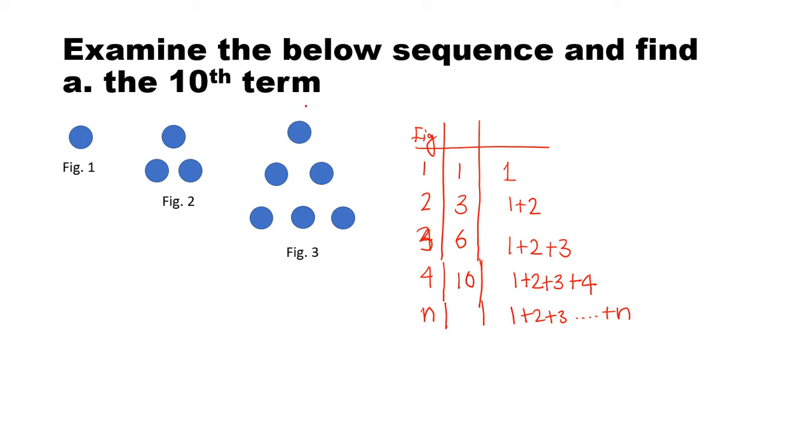Now we need to find the tenth term. The tenth term means we have to find one plus two plus three plus four plus five plus six plus seven plus eight plus nine plus ten. So it's going to be a lot of computing. So instead of doing the hard way, there is a shortcut for finding the sum of all the terms in this sequence.